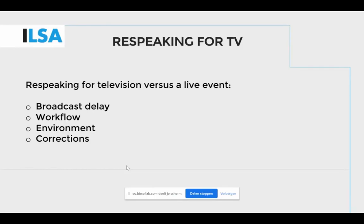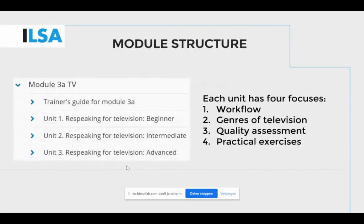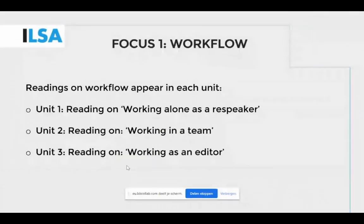Live subtitles for television can also be recorded, and many amusing uncorrected texts have made it into the media. Here is the structure of module 3a: they are organized around three levels of difficulty — beginner, intermediate, and intermediate advanced — and each unit has four focuses. First, the workflow, which covers working alone, working in a team, and working as an editor. Then we have the different genres of television, for example sports, news, weather, speeches, and interviews. The third focus is quality assessment, which draws on the NTR model, and the fourth is practical interlingual respeaking exercises.